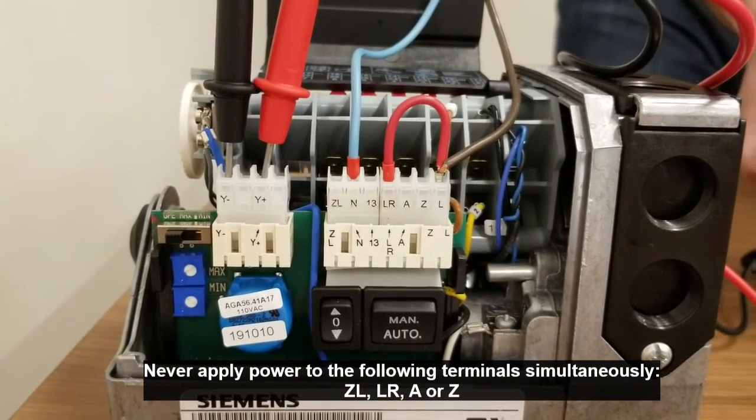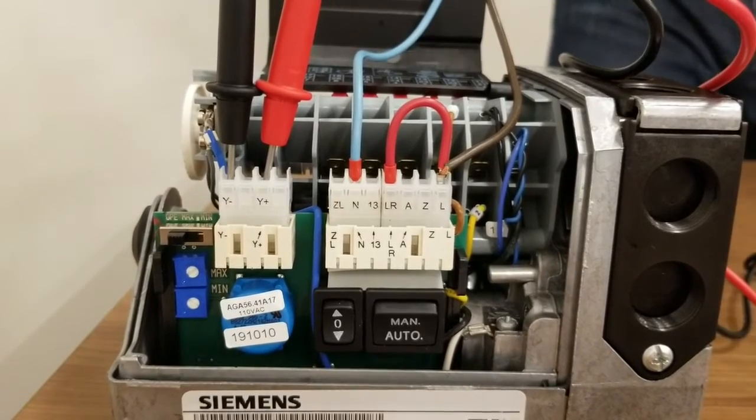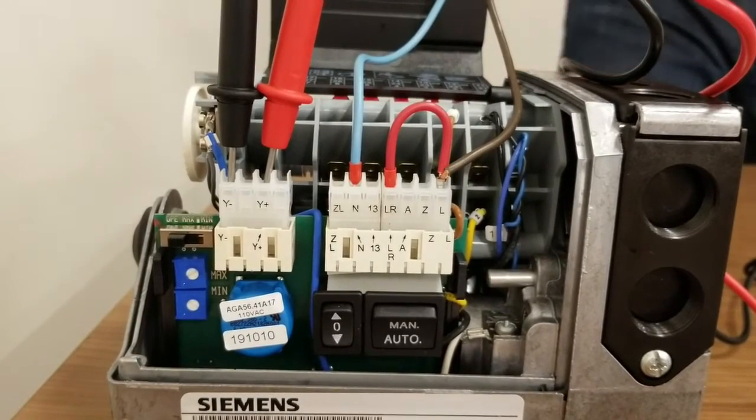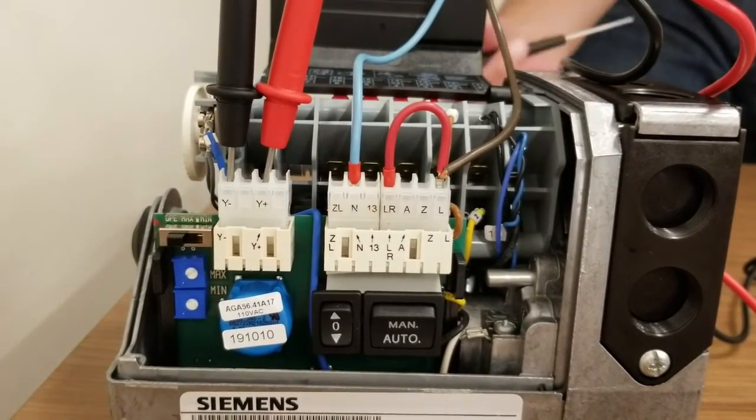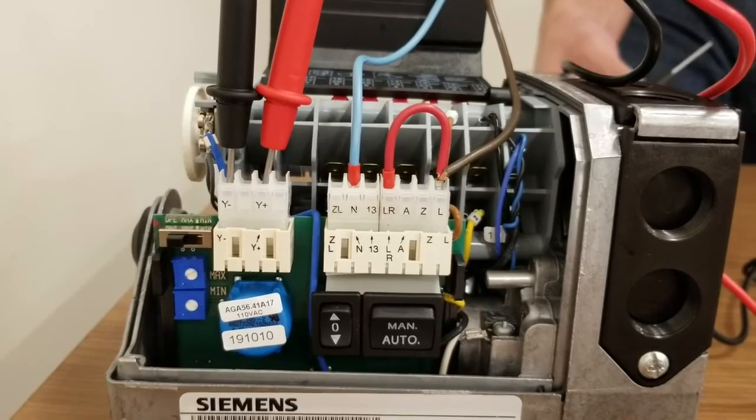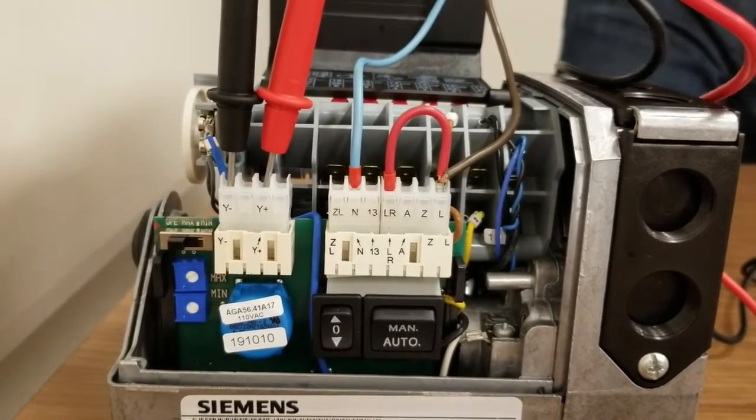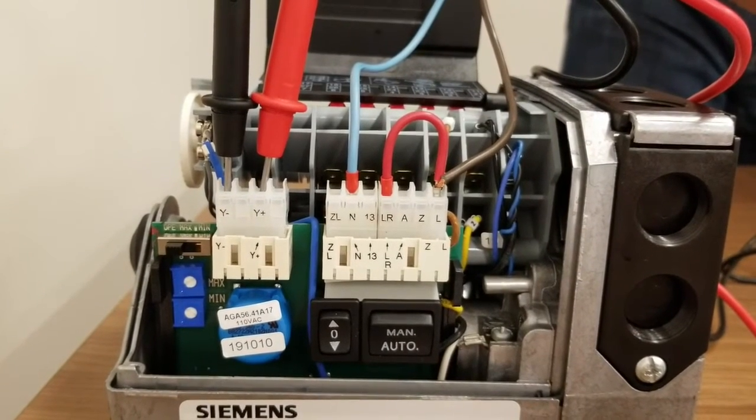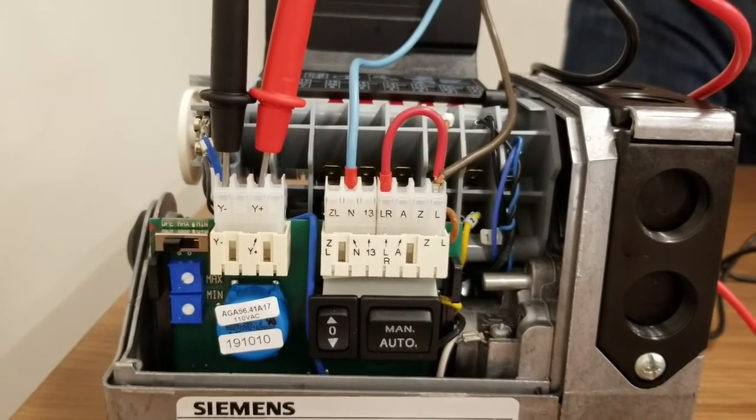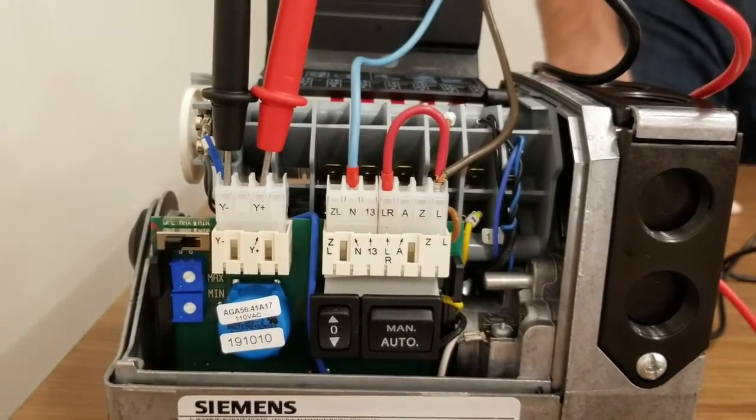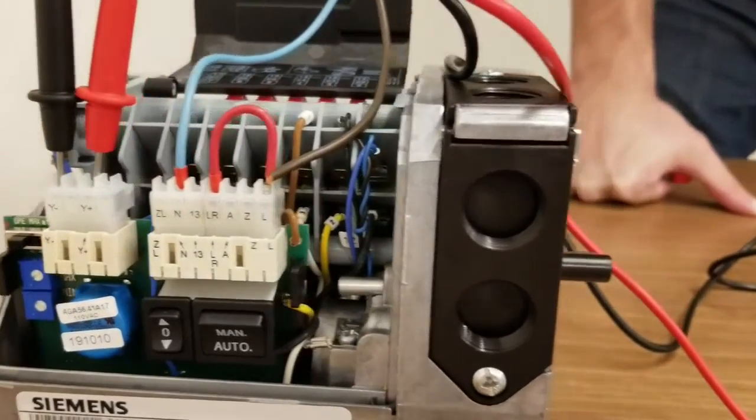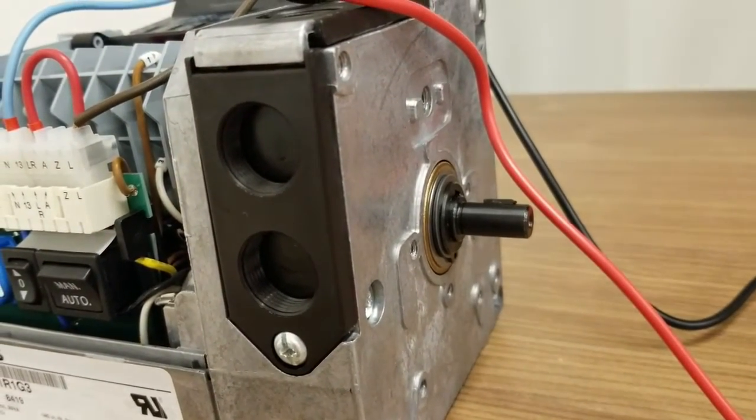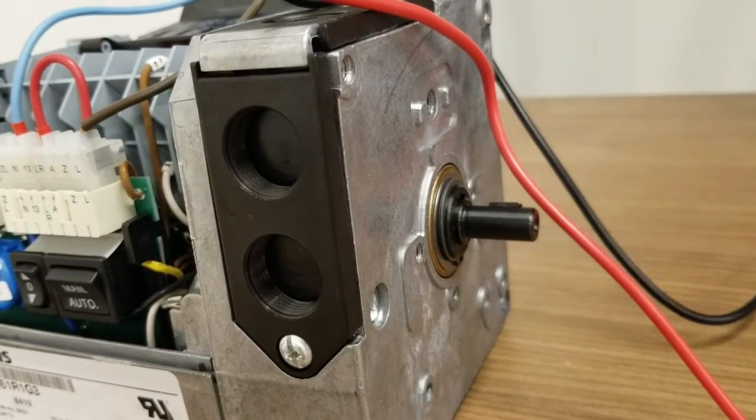Now that we have power applied to our LR, we can supply our input signal, our analog input signal, which in this case is going to be a 4 to 20 milliamp signal. I have the terminals here hooked up to a signal generator. Right now I'm going to supply 20 milliamps and the actuator is driving open. As you can see, the shaft is rotating to our open position, which is defined by CAM 1.